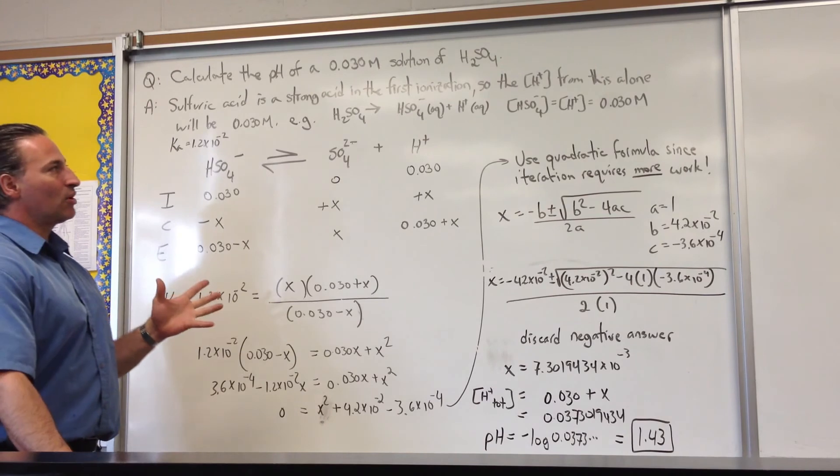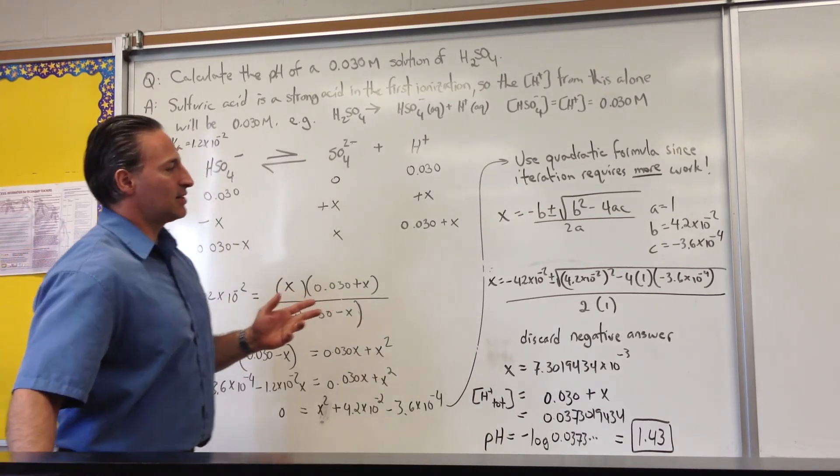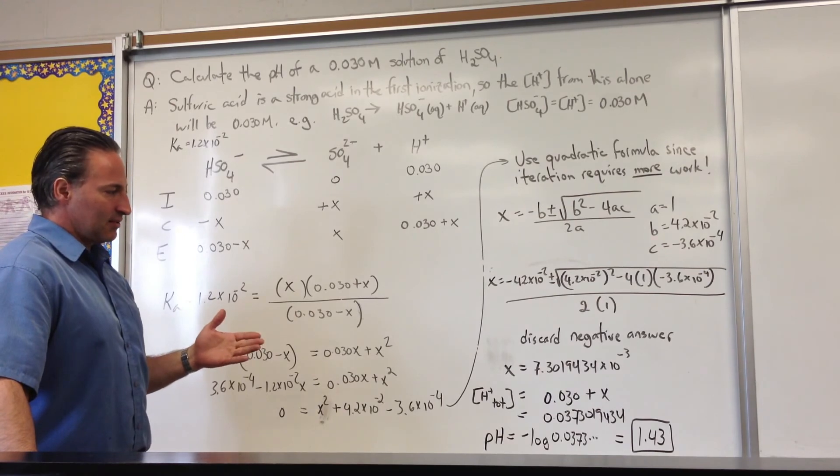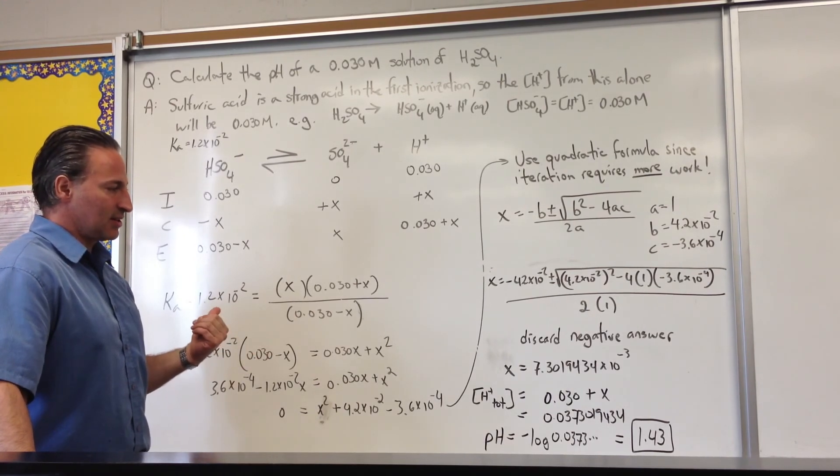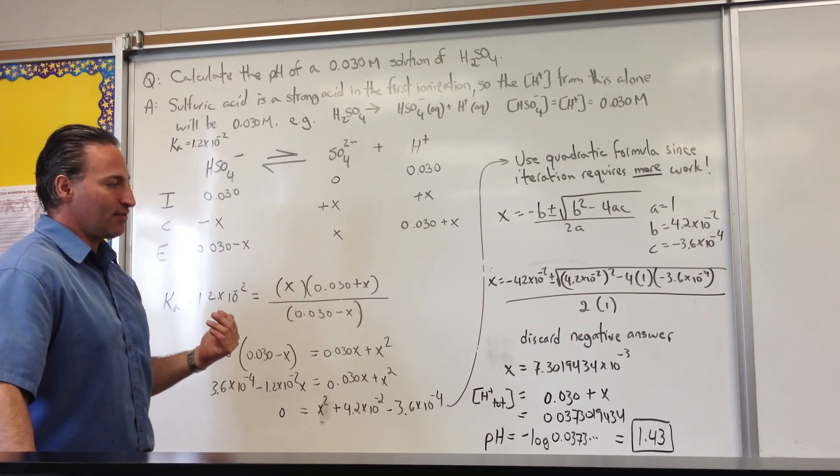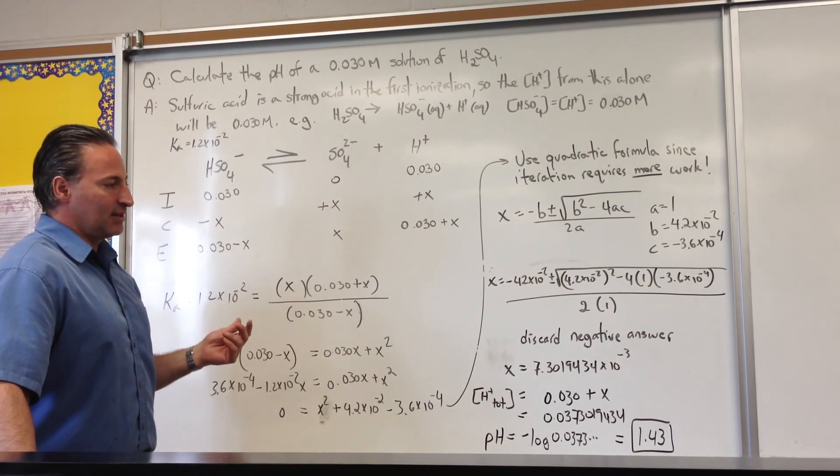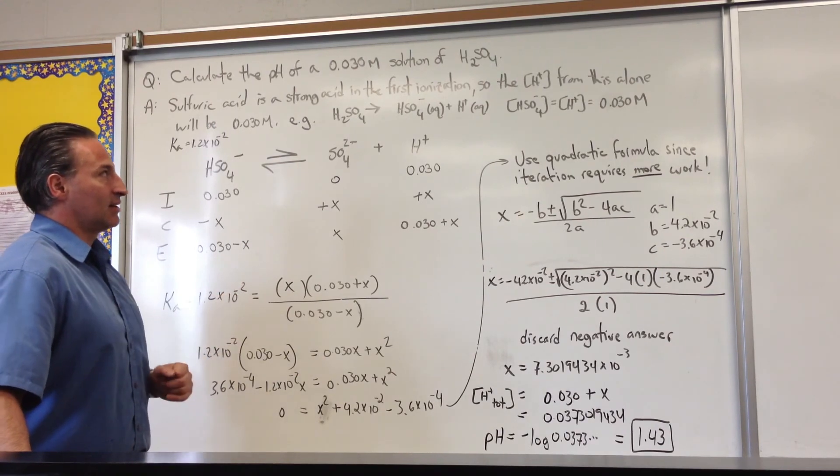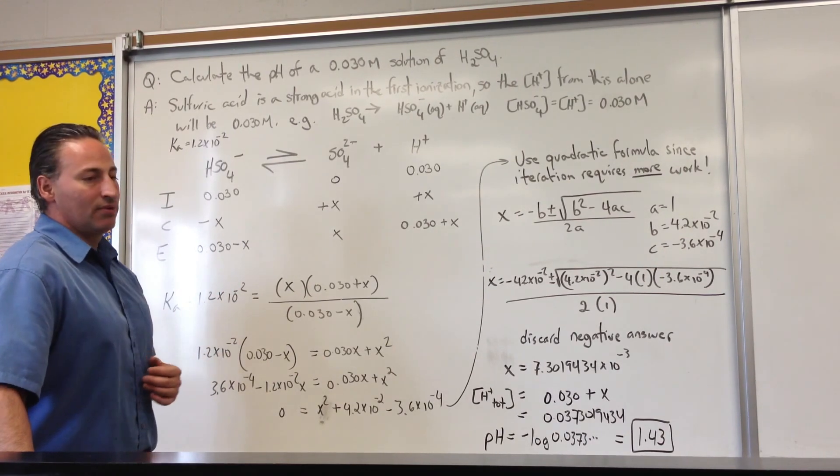If we had a more concentrated solution of sulfuric acid, you would find that the presence of the concentrated acid suppresses the second dissociation enough that it doesn't put a dent in the pH. But when it's a weak solution of sulfuric acid, then the second dissociation is important enough to affect the pH.